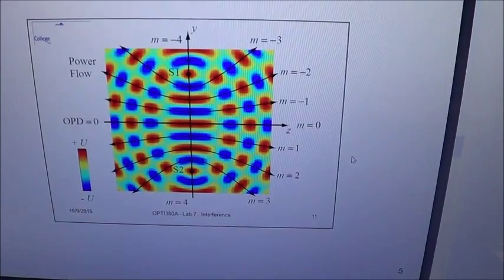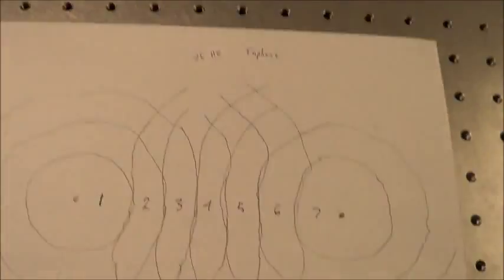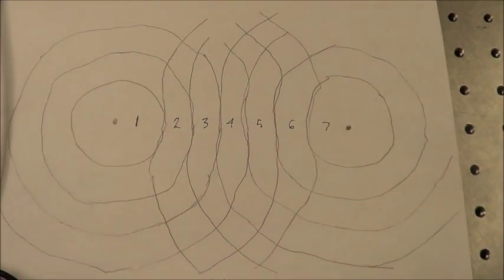Also, the dark fringes as seen in the class model very closely match the dark fringes that were observed in the ripple tank.